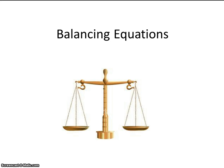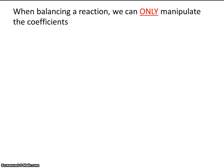In this video, I'm going to provide you with a few tips for balancing equations. When balancing a reaction, we can only manipulate the coefficients. I want to emphasize that the only thing we can change are coefficients — we can't change subscripts, we can't change the way the formula is written. We can only write the reaction, and then once the reaction is written, only then can we manipulate the coefficients.